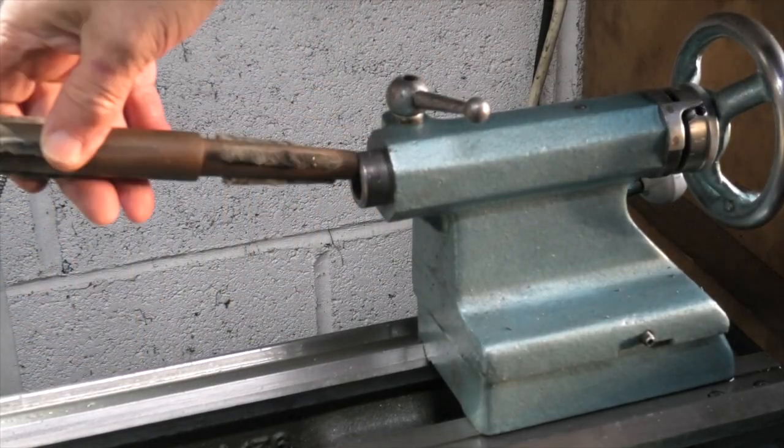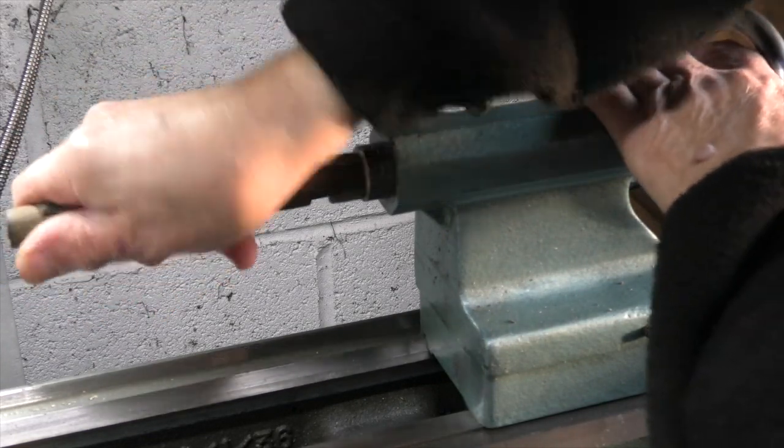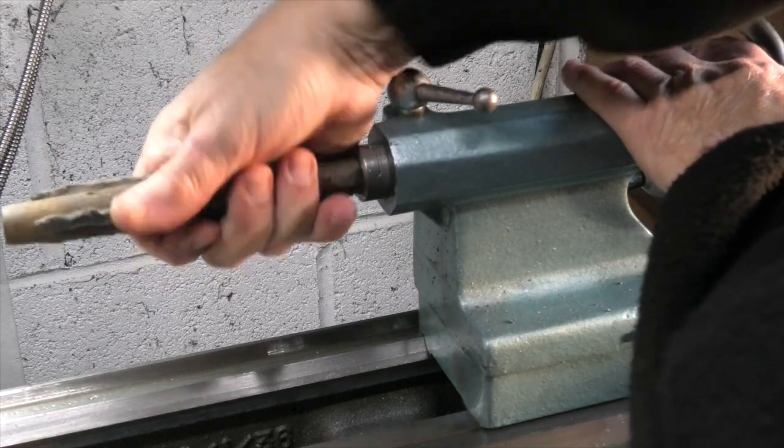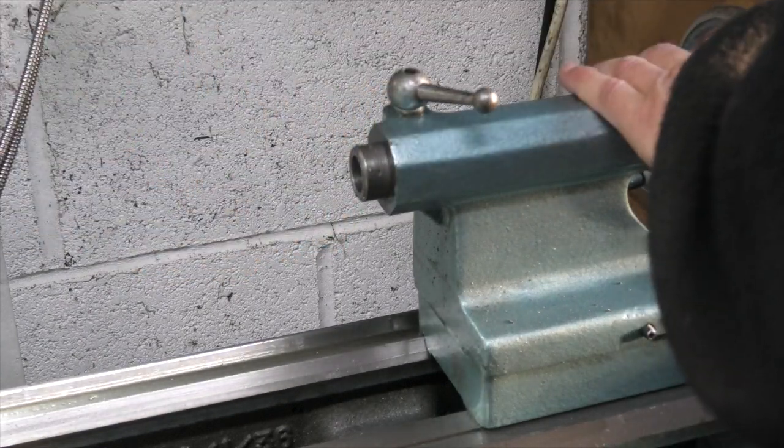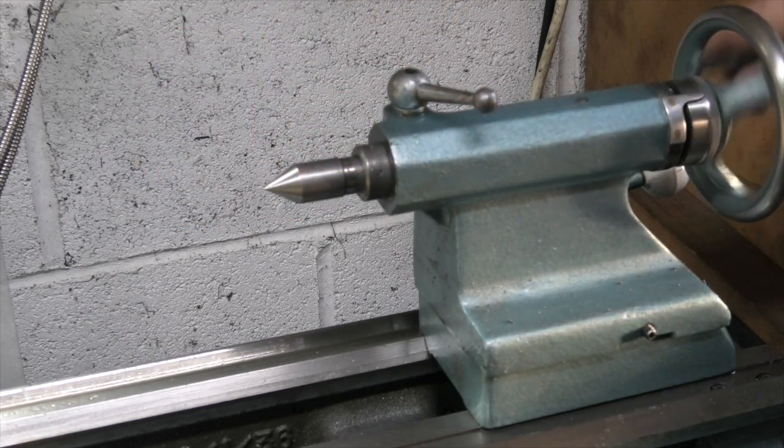On the tailstock end let's clean the bore out with the bore cleaner. And put number one morse taper centre in this end.